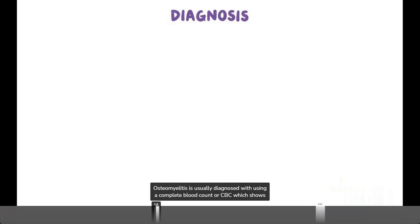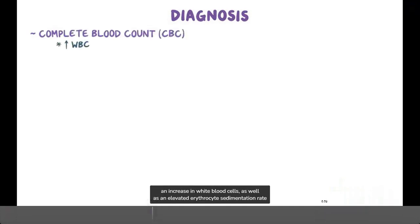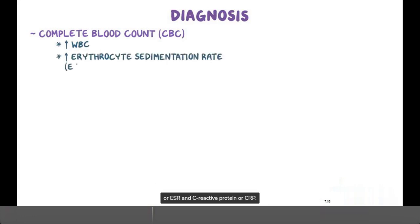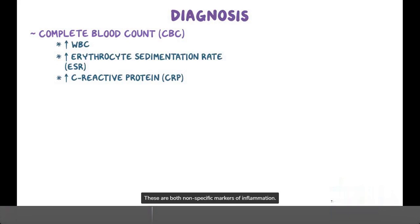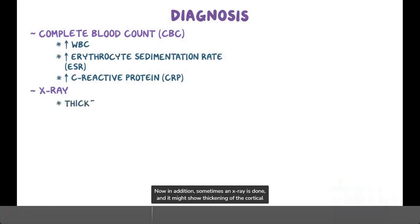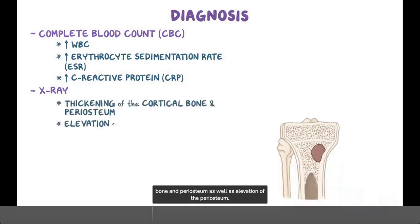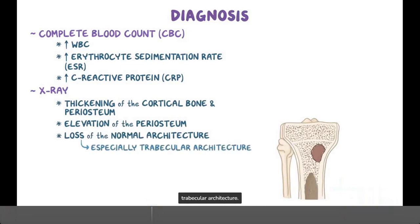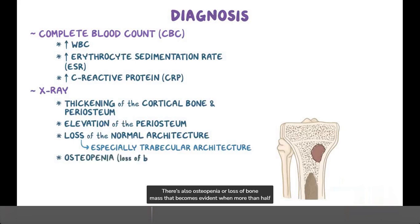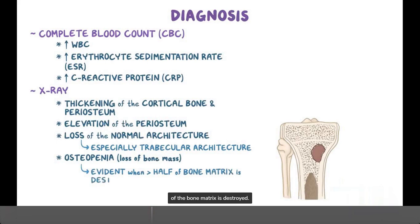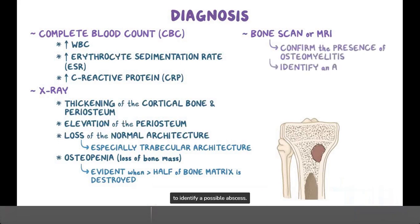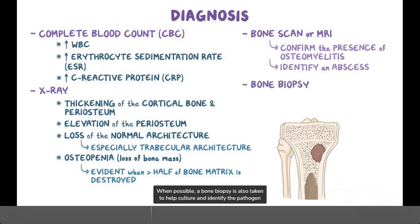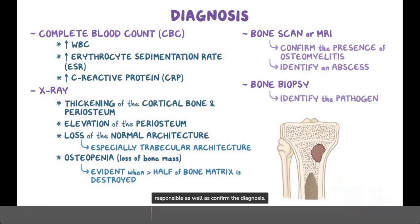Osteomyelitis is usually diagnosed using a complete blood count (CBC), which shows an increase in white blood cells, as well as an elevated erythrocyte sedimentation rate (ESR) and C-reactive protein (CRP) — both nonspecific markers of inflammation. Sometimes an x-ray is done, and it might show thickening of the cortical bone and periosteum, elevation of the periosteum, loss of normal bone architecture especially the trabecular architecture, and osteopenia — loss of bone mass that becomes evident when more than half of the bone matrix is destroyed. A bone scan or MRI is done to help confirm the presence of osteomyelitis and identify a possible abscess, and when possible a bone biopsy is taken to culture and identify the pathogen responsible as well as confirm the diagnosis.